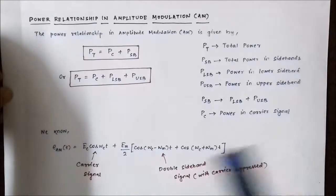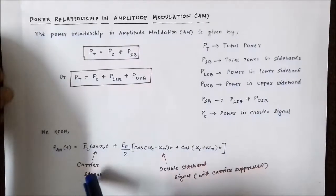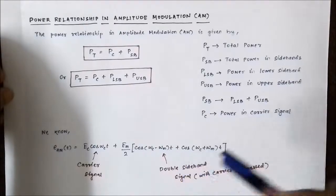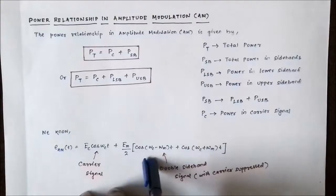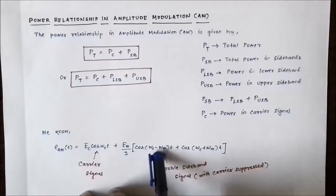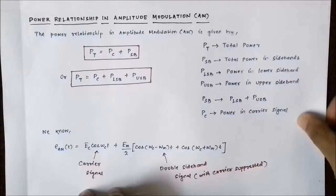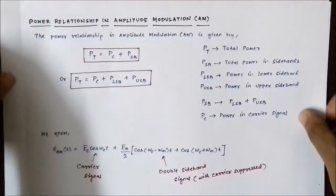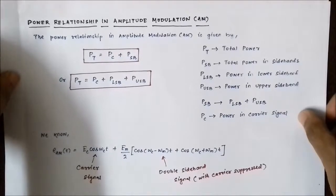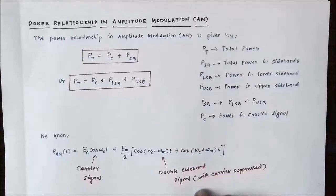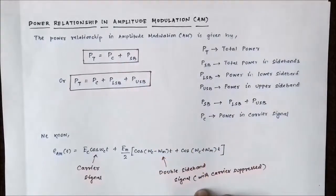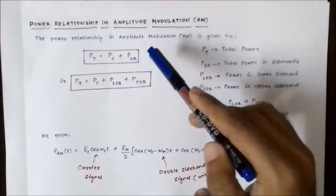As you know, the amplitude modulated signal waveform consists of two parts discussed in the previous video: the carrier signal part, Ec·cos(ωc·t), and the double sideband signal — Em/2·cos(ωc − ωm)t, which is the lower sideband, and cos(ωc + ωm)t, which is the upper sideband. The total power in an amplitude modulated signal is the sum of the power in the carrier signal Pc plus the power in the sidebands Psb.